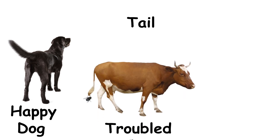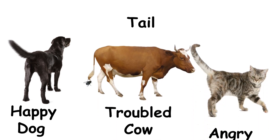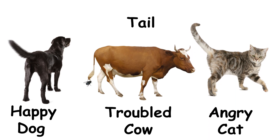Facts about animal tails: a happy dog wags its tail. A troubled cow swats flies with its tail. An angry cat stares with its tail up.